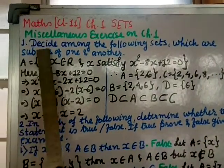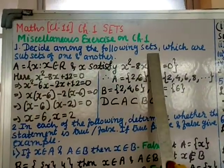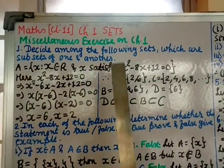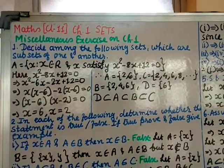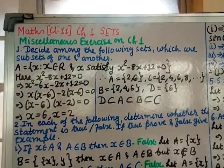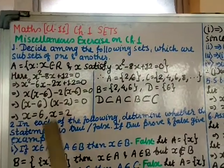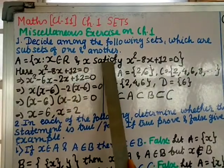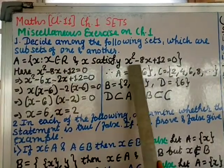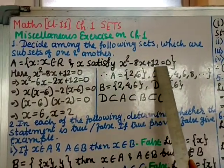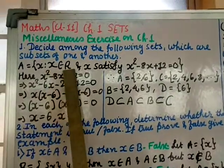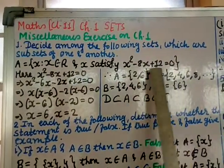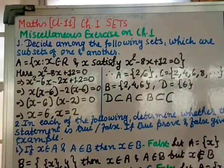Question number one: decide among the following sets which are subsets of one another. We are given four sets and we have to write which are the subsets of each other. Set A is given as x such that x belongs to R and x satisfies x² - 8x + 12 = 0, so x is a real number satisfying this quadratic equation.